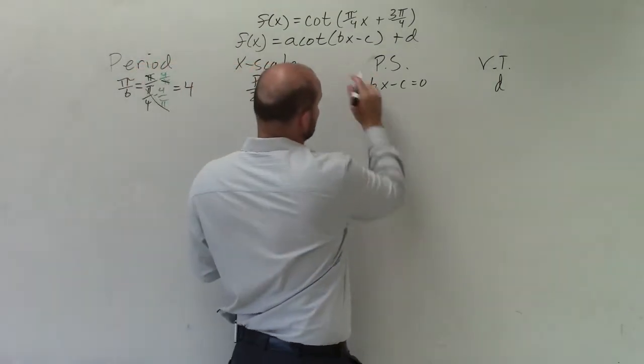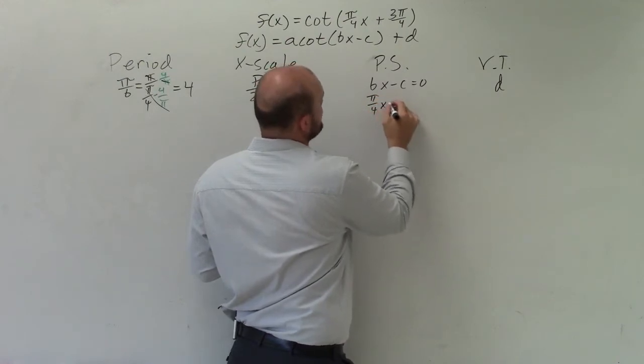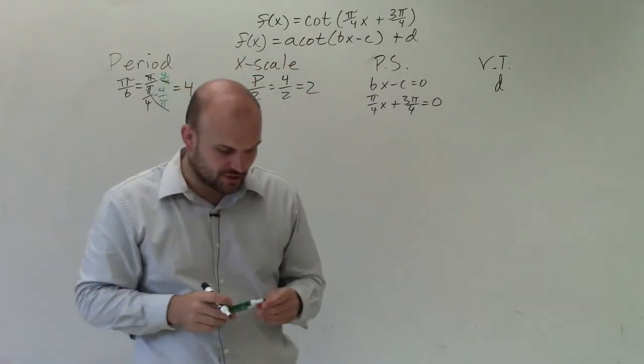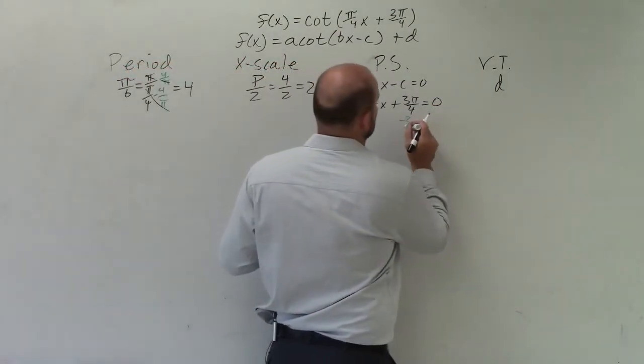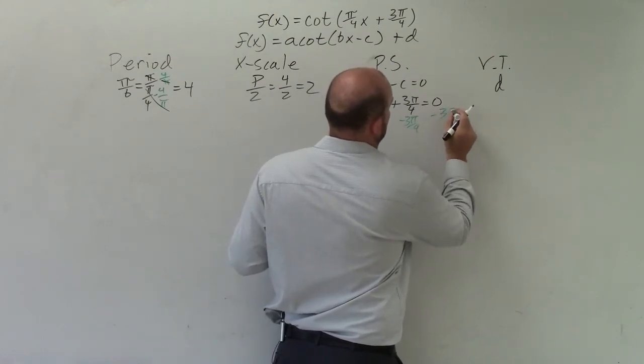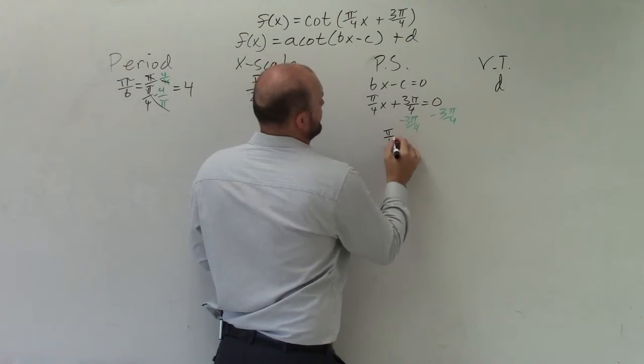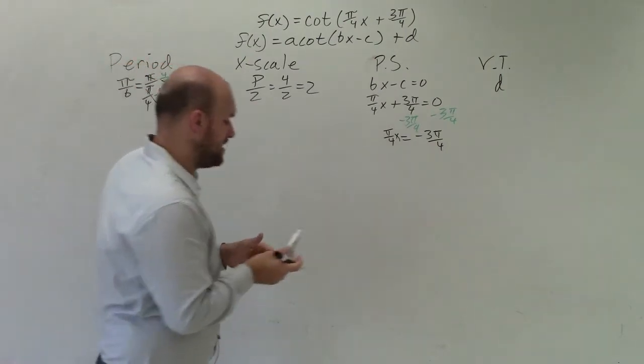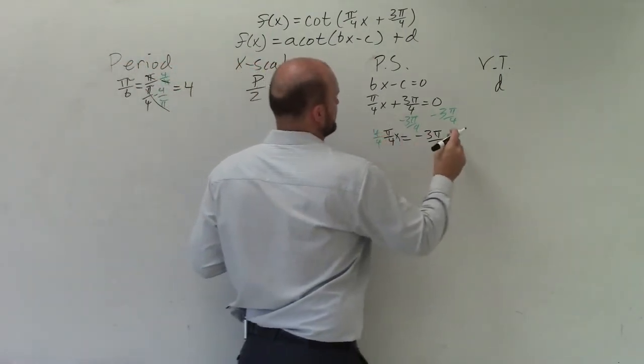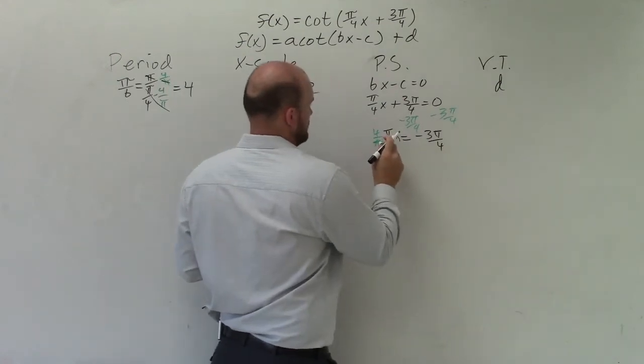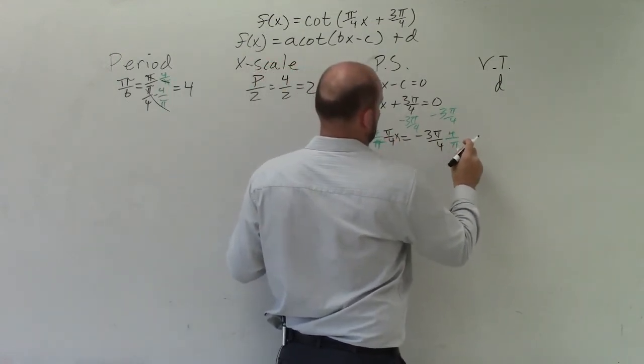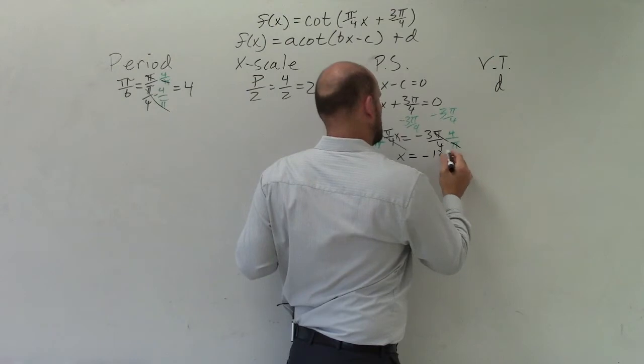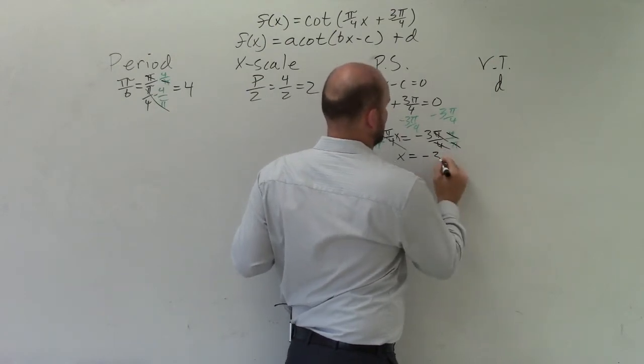Now to determine the phase shift, I'm simply just going to take whatever's inside my parentheses and set it equal to 0, and then solve for x. So I need to subtract 3 pi over 4 on both sides. So I have pi over 4 x equals negative 3 pi over 4. And then multiply by the reciprocal to get rid of the pi over 4. So therefore, I have x equals negative 3.